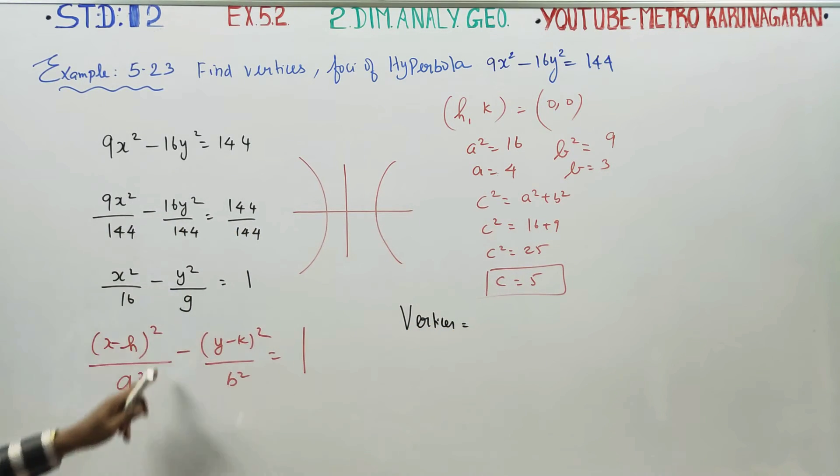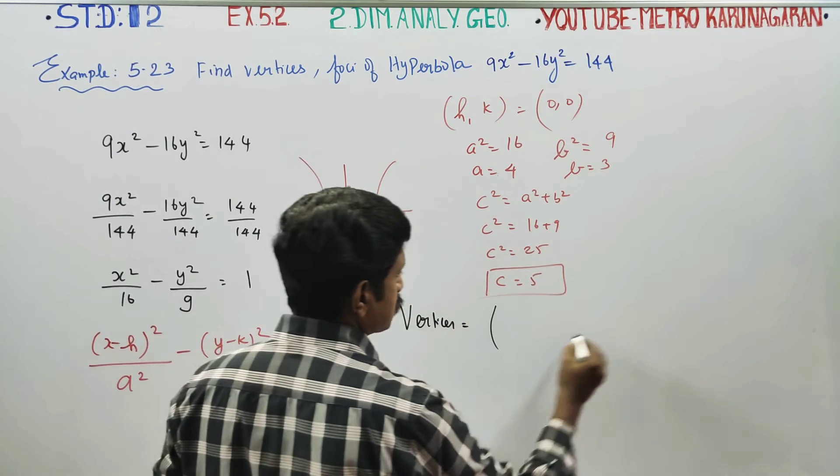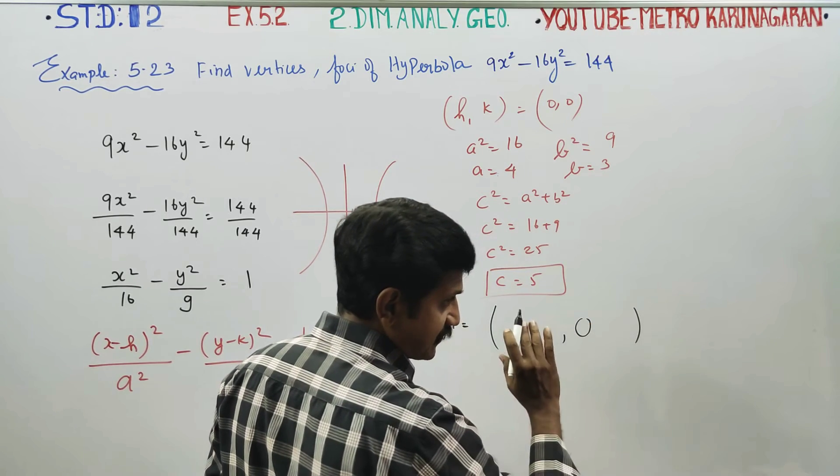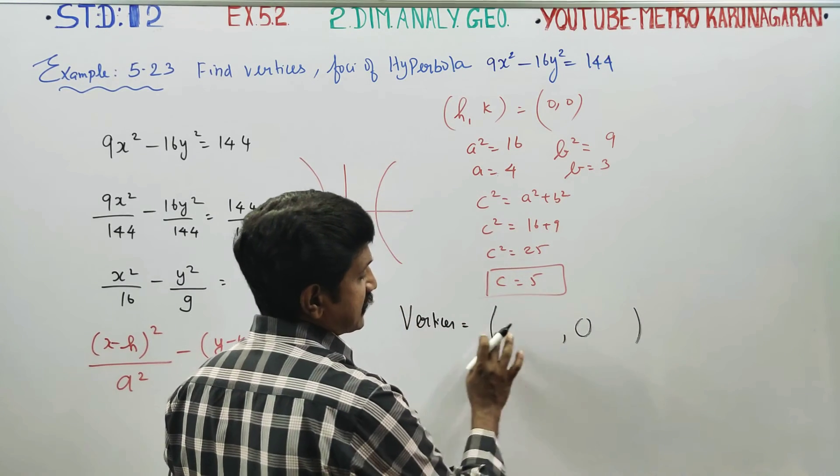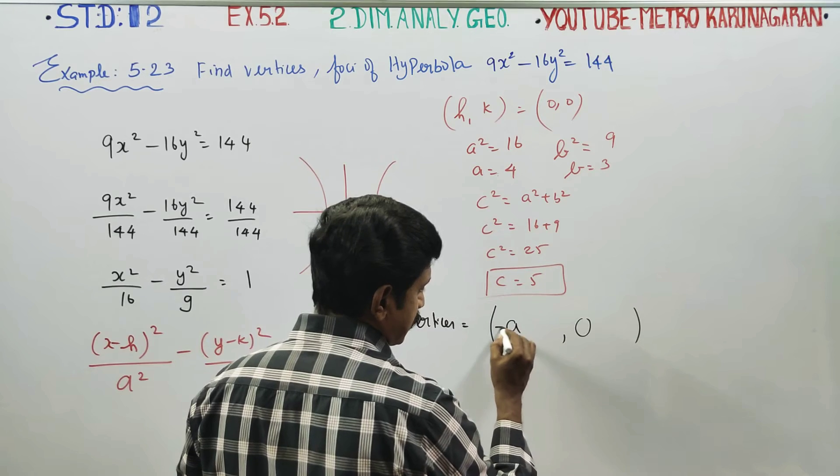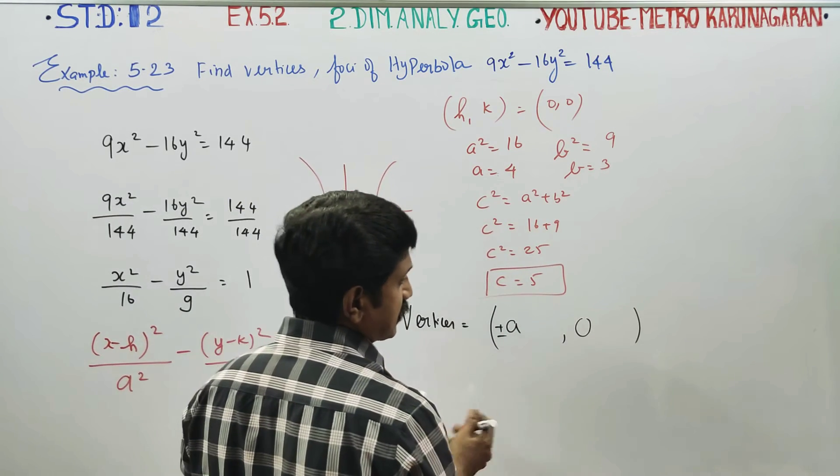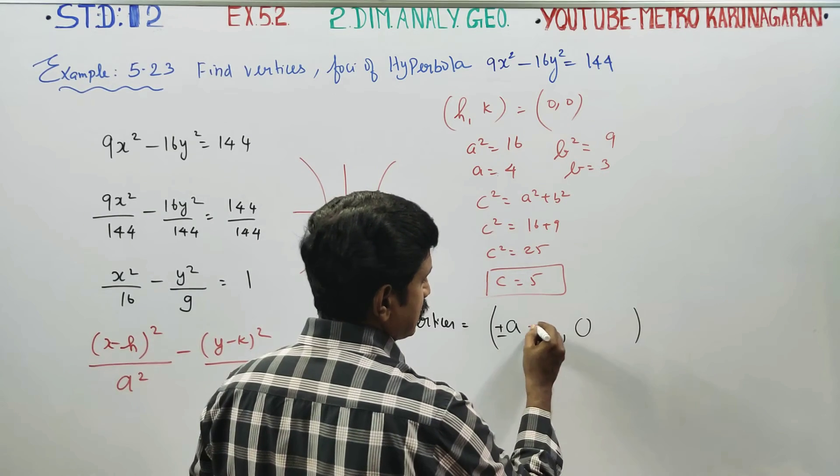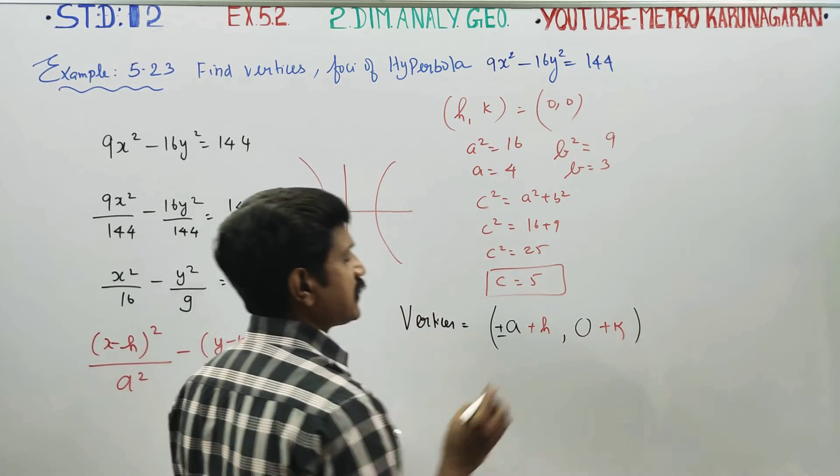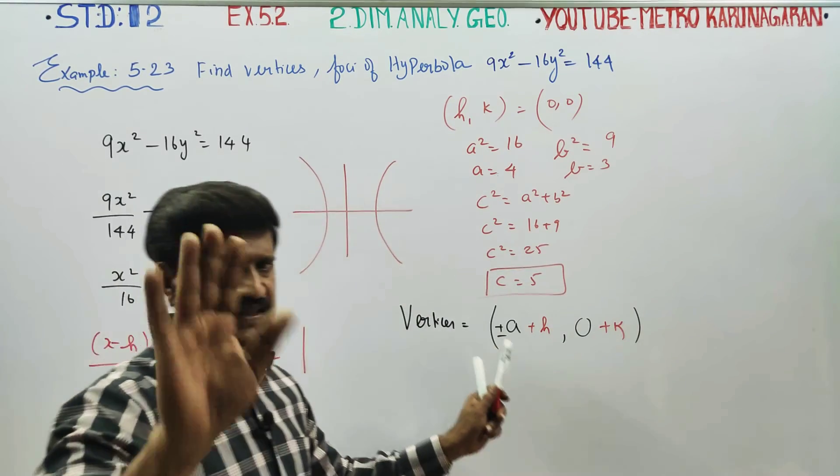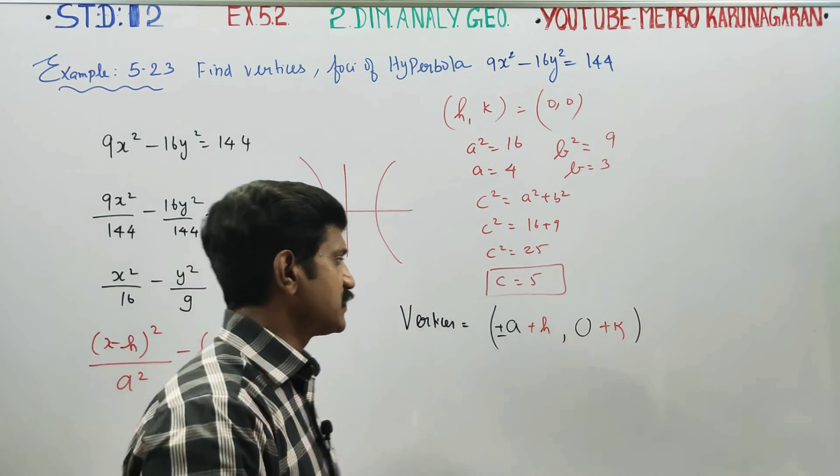If it is horizontal, the vertices formula is plus or minus a, 0, and we have to add h and k to this.